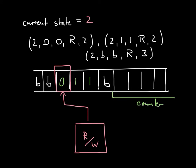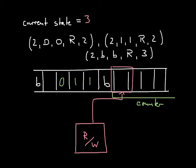A set of instructions that accomplish this: in state 2, no matter what we read — whether 0 or 1 — we always leave what we read the same, go right, and stay in state 2. That means as long as we read non-blank input bits, we leave them as they are and go right. Only when we hit a blank — the first blank to the right of the input — we go right and transition into state 3. After going through this subroutine, we would be on that cell and in state 3.